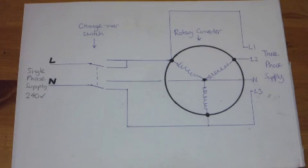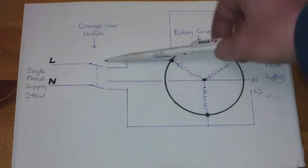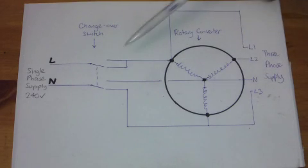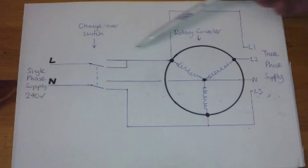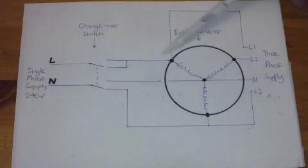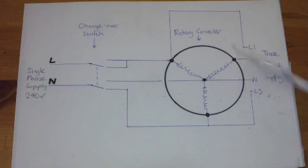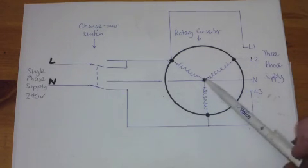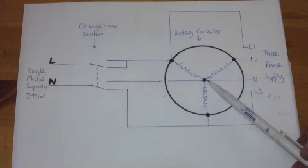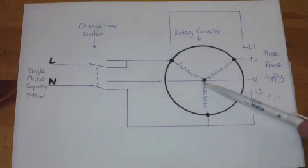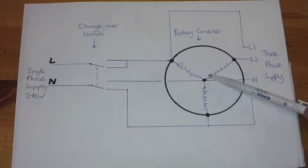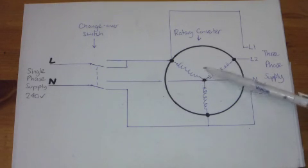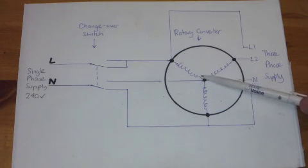But of course that's not going to give us a true three phase supply so we need to do something else. The switch gets moved to the run position just as before the live of the 240 goes straight onto one of the phase legs but this time the neutral goes to the star point of the converter. This is the first time that we've seen neutral go where it actually needs to be because of course on a three-phase system as I showed in part one neutral is the star point.